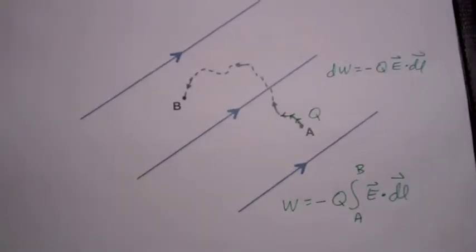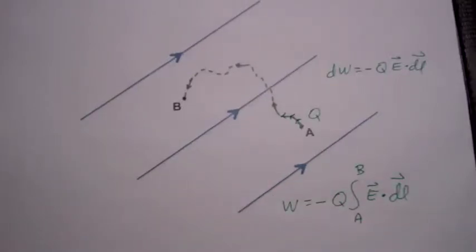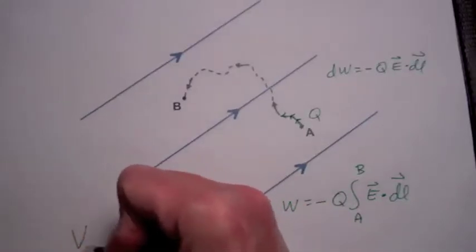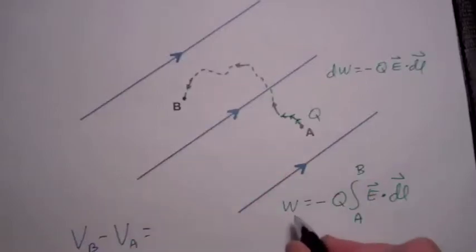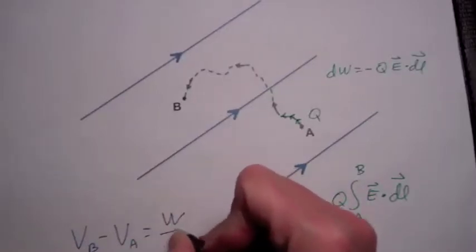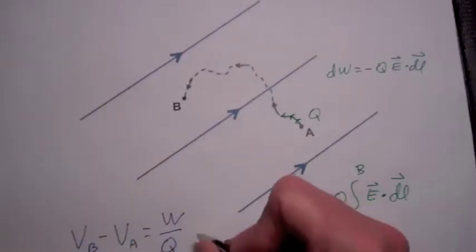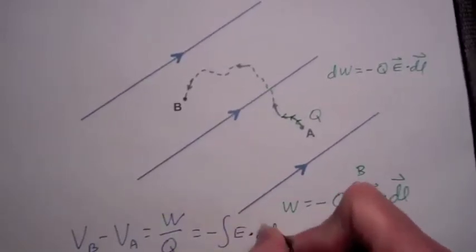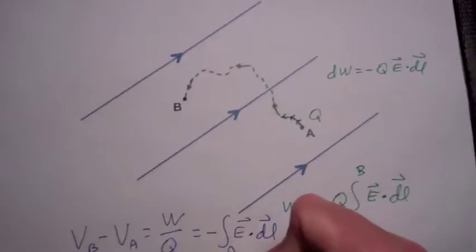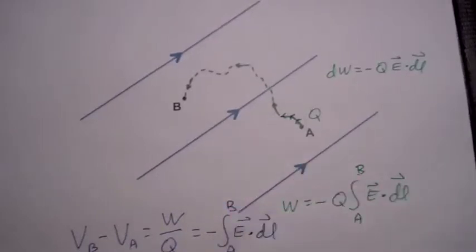Potential is the amount of work done when moving one coulomb of charge. So the potential difference between points B and A will be the work divided by Q, or minus the integral of E dot DL from the initial position A to the final position B.